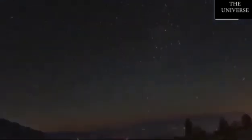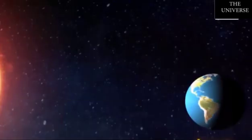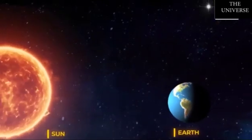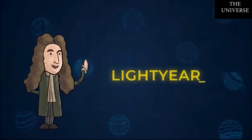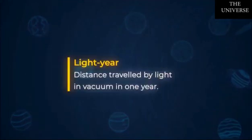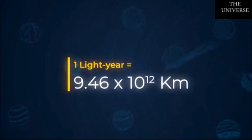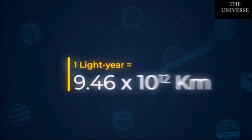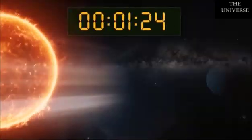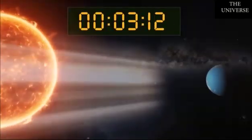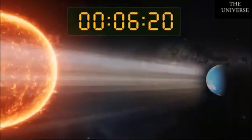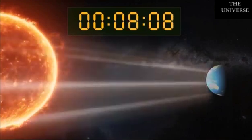The distance is so huge it cannot be expressed in kilometers. Therefore, astronomers have come up with a better unit to measure such large distances — that is, the light year. A light year is the distance traveled by light in one year. It is equal to 9.46 × 10¹² kilometers. Sunlight takes around eight minutes and twenty seconds to reach the surface of the Earth.